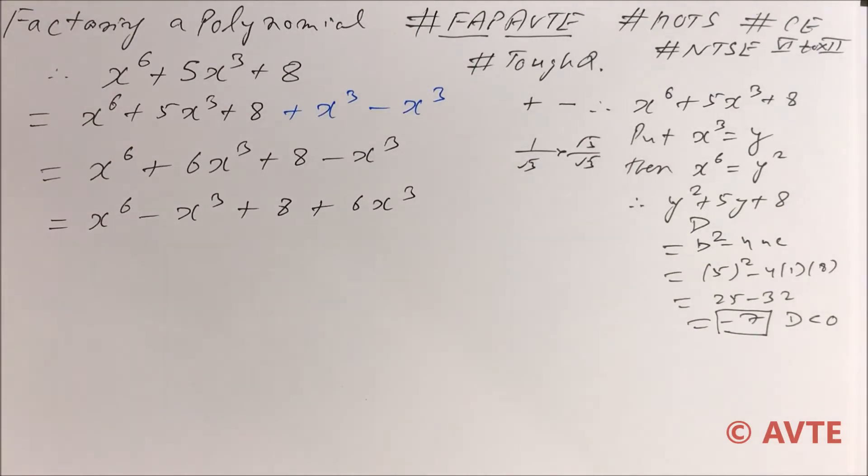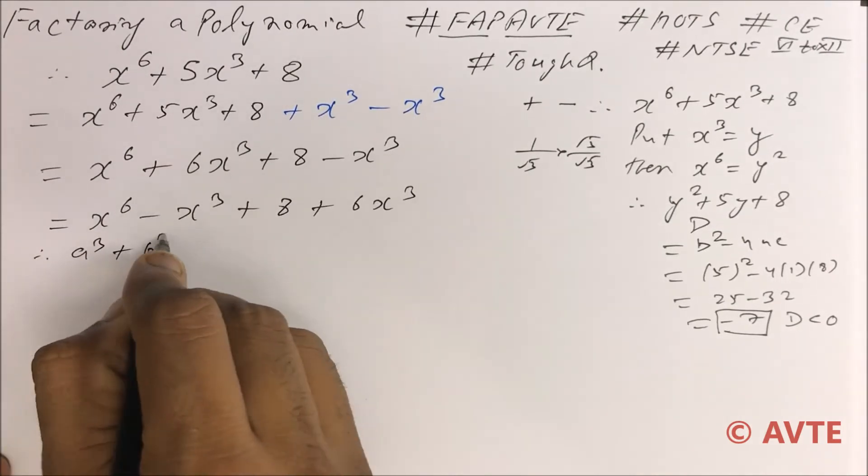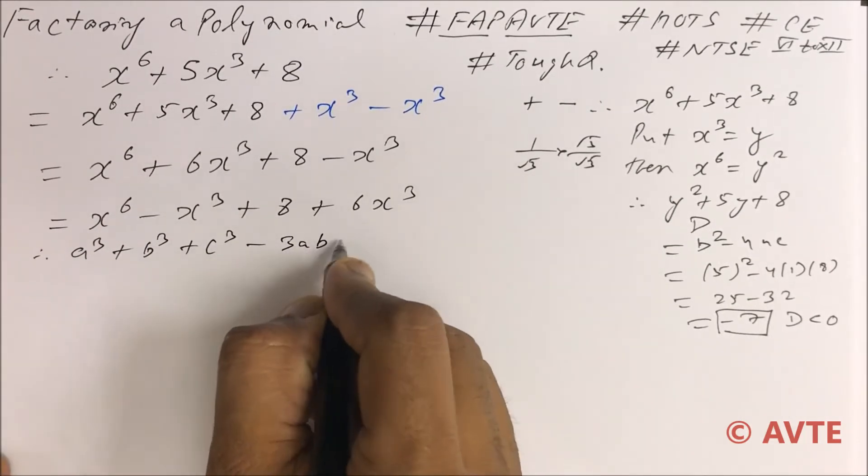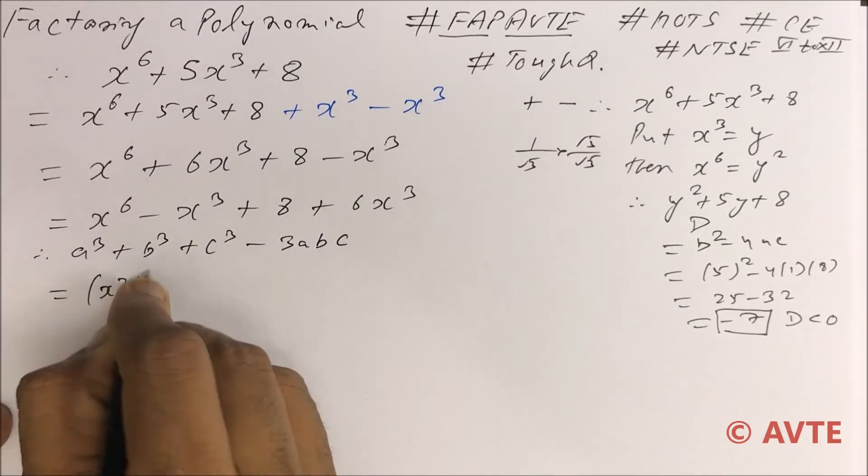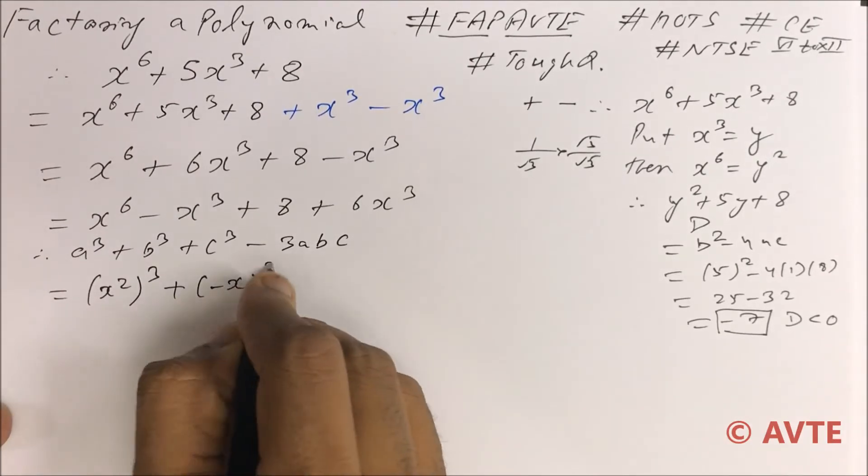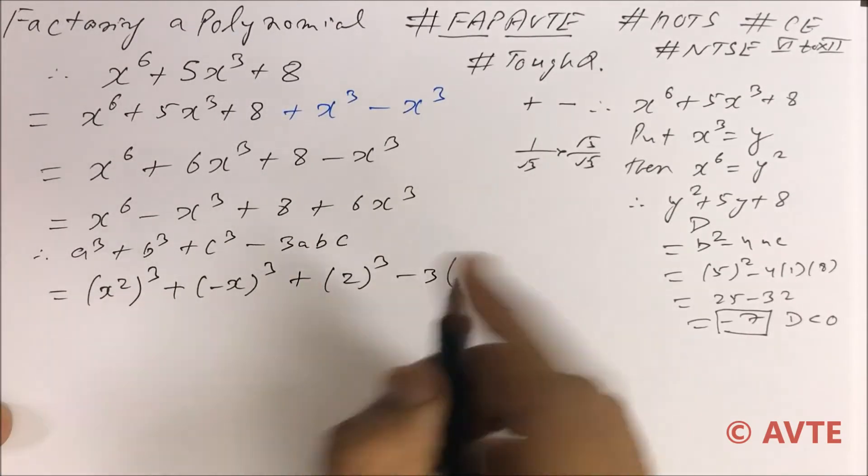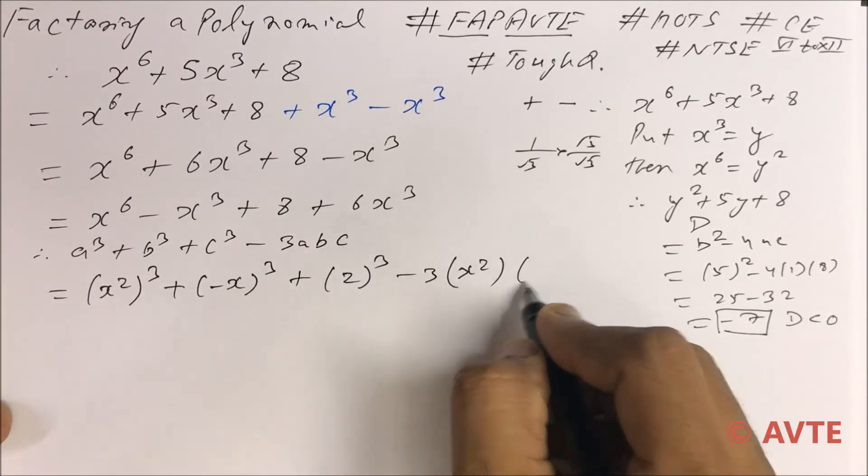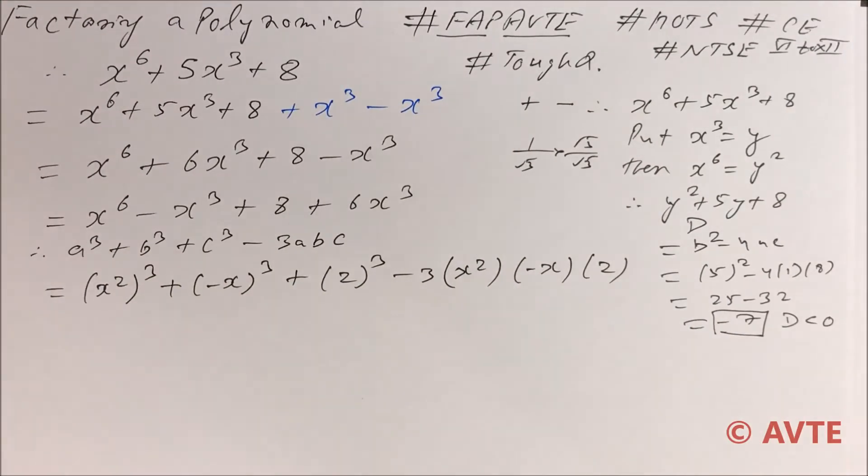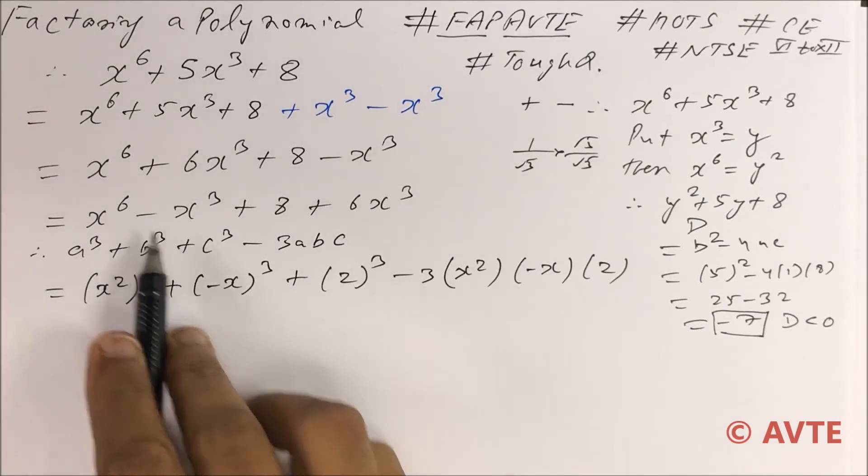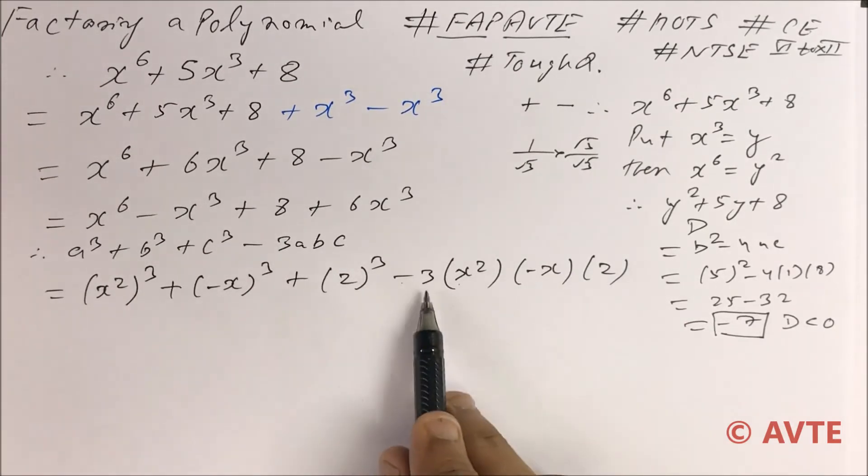I just remember one formula here that is a cube plus b cube plus c cube minus 3abc. Now check. This is a cube plus b cube plus c cube minus 3abc. Just check. x to the power 6 minus x cube plus 2 cube which is 8, minus plus minus plus is plus 3abc.